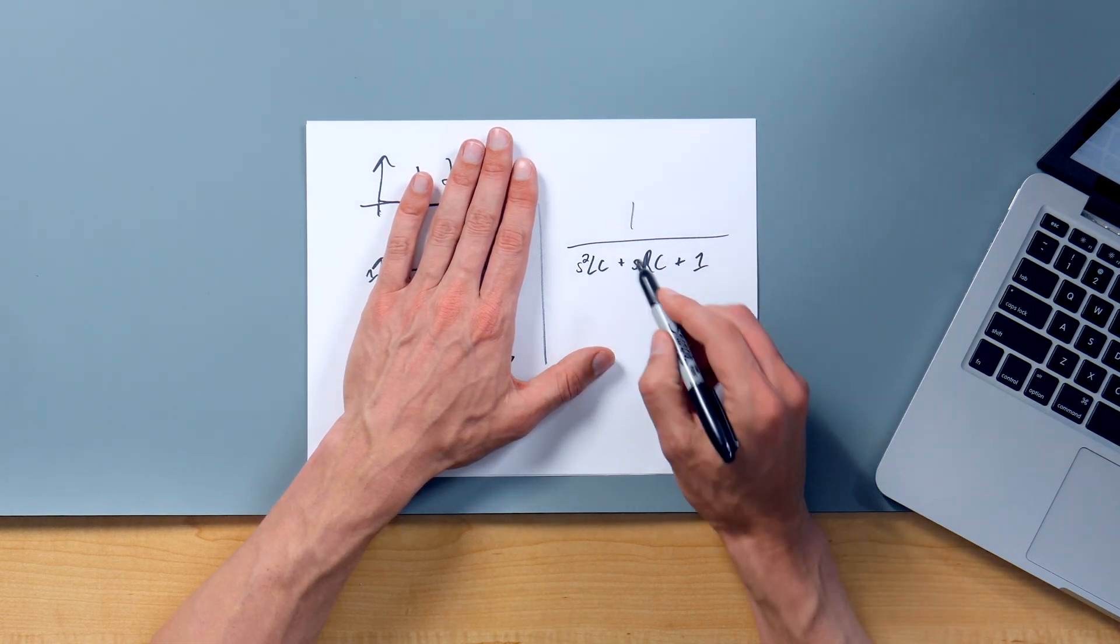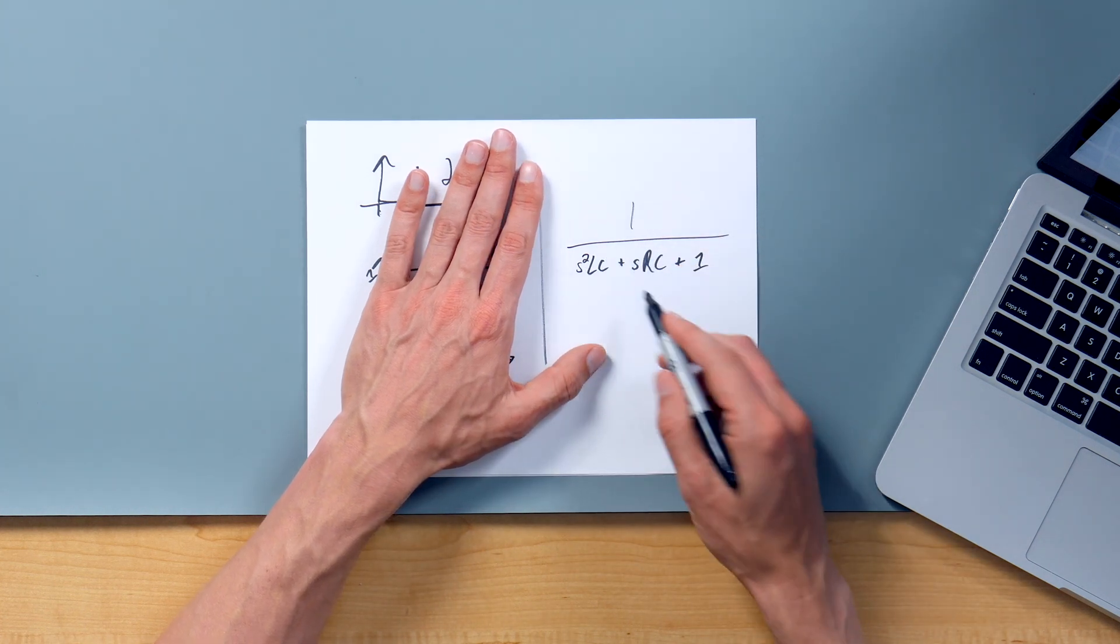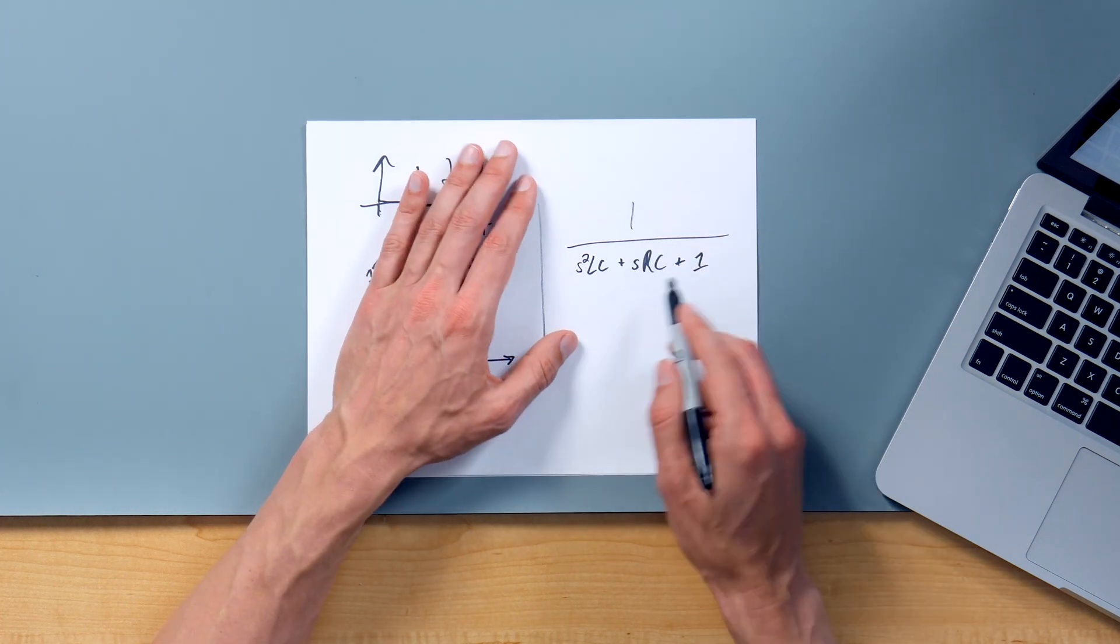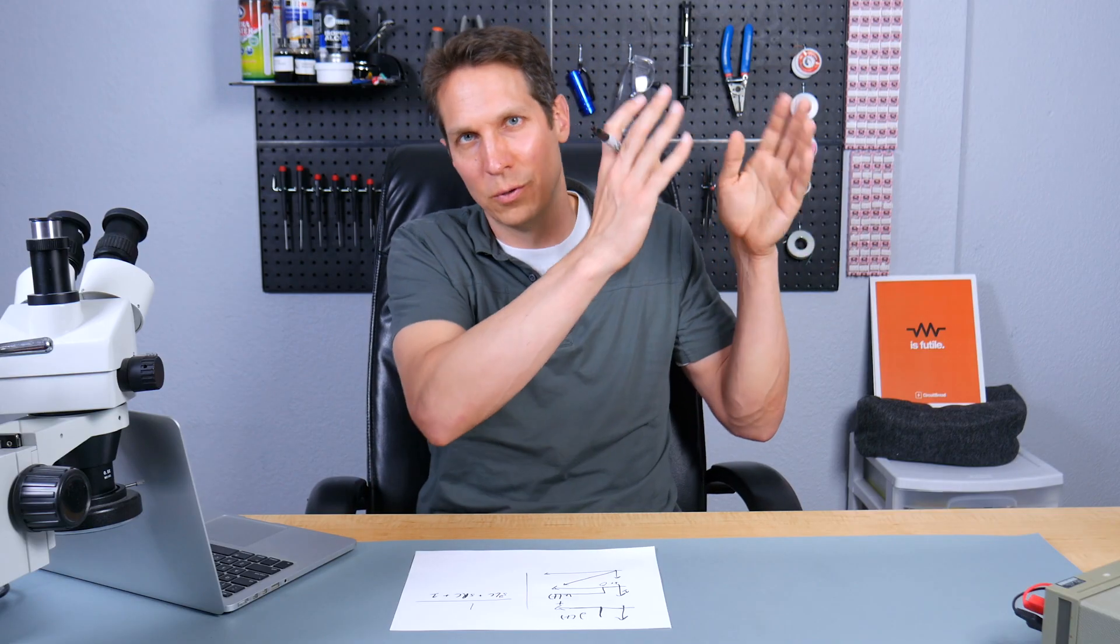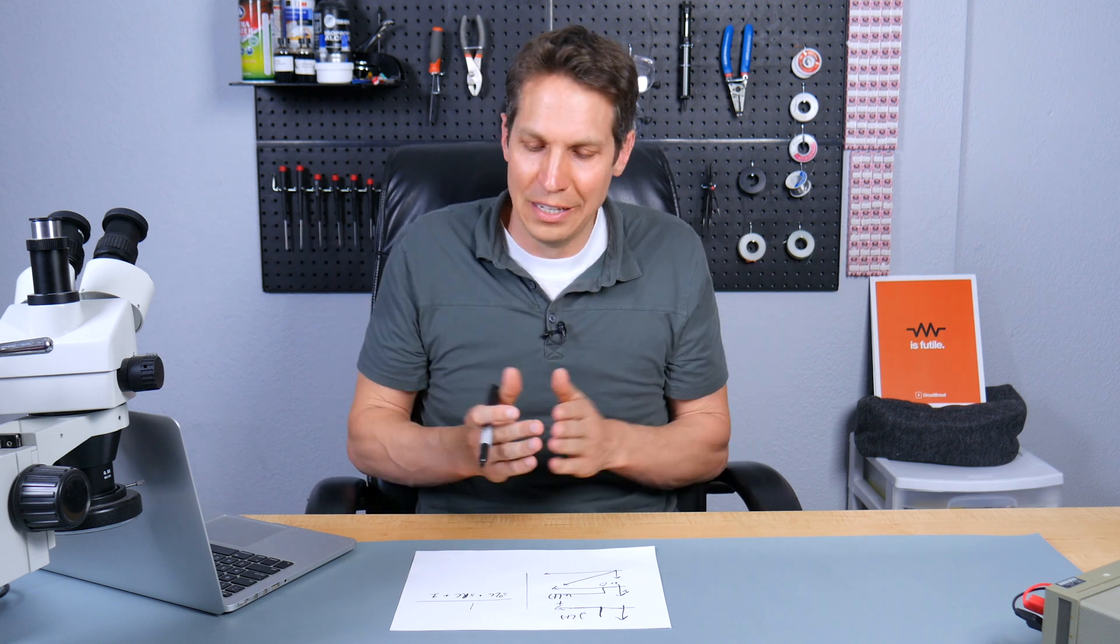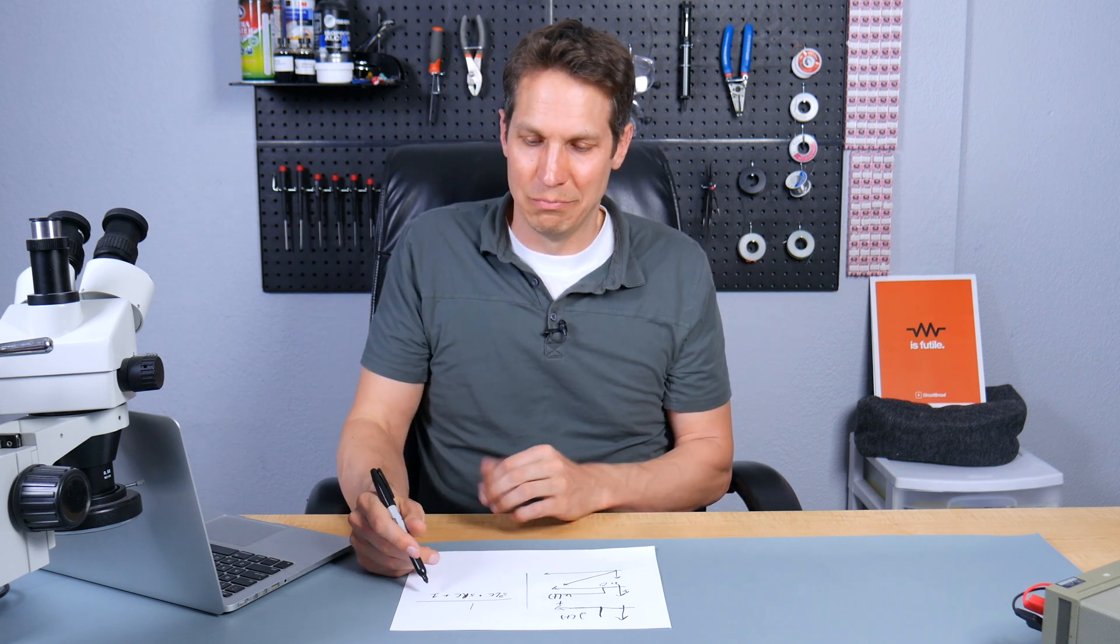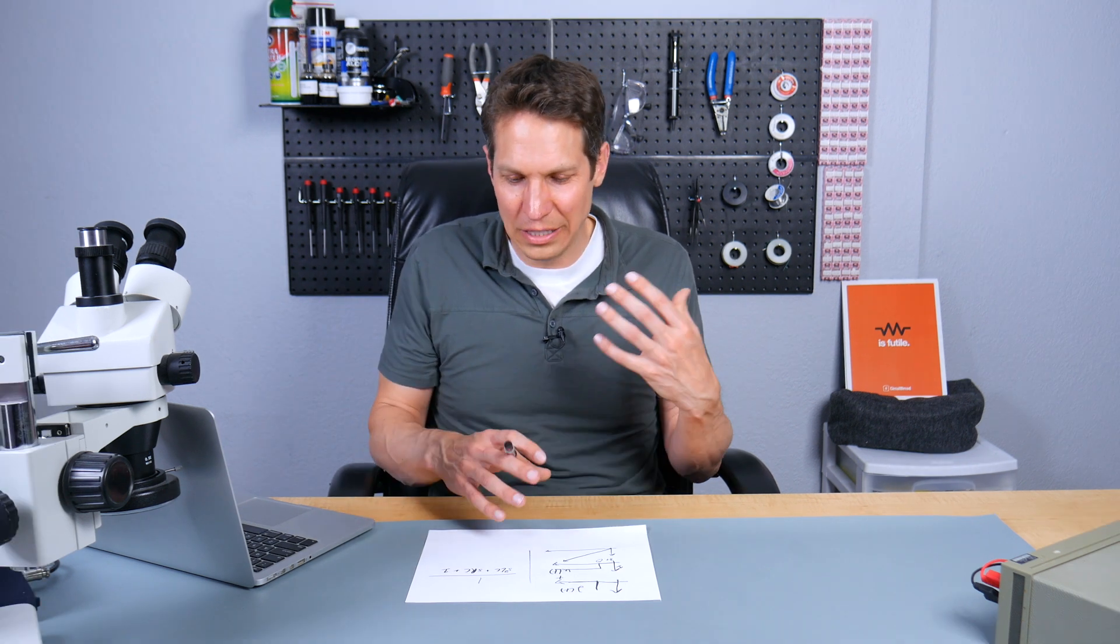And you have the s squared, which comes when you create the Laplace, you get these s's and you notice how it's s squared, s, and then one where it doesn't have an s. And so that's very common. You'll see s to the fourth, s to the third, s squared, s to the one which is just s, and then s to zero which is one and all of this stuff actually means something.